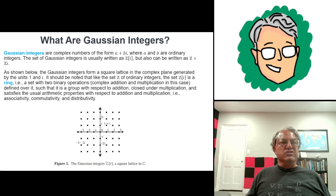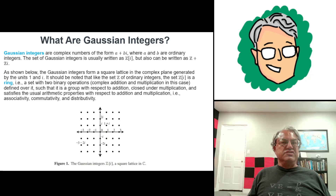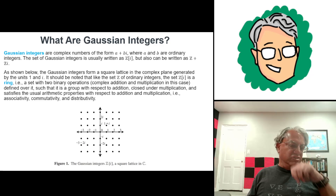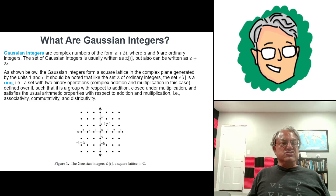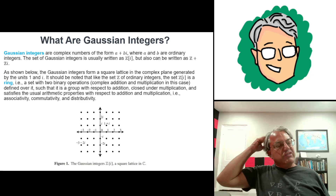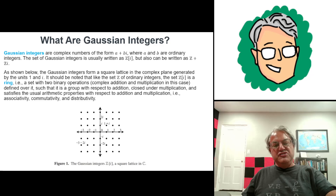It's not a field because you can't always divide. If you try to divide two integers, you don't always get an integer — you can't even divide two non-zero integers and necessarily get an integer; you usually get a fraction, a rational number. And the Gaussian integers have all the same properties as the ordinary integers — they're also a ring in the same way. That's provable, and it's a nice property of the Gaussian integers.